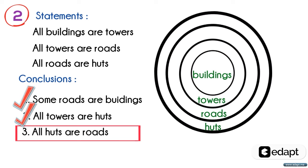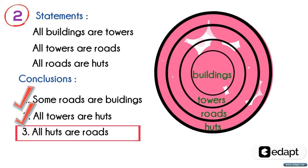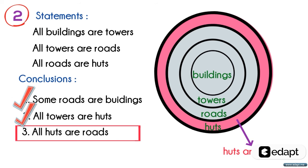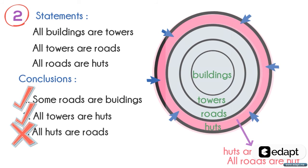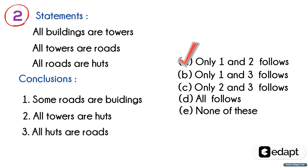all huts are roads means that the complete portion of huts are inside roads. But here you can see that there is a small region in which huts are not roads. We can say that all roads are huts, but all huts are not roads due to this region. Hence it's a false statement. Finally, the true statements are the first and second, so the answer is option A — only one and two follow.